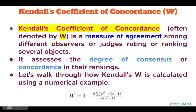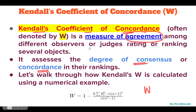Hello everyone, I hope you all are doing very well. In this session we are going to discuss Kendall's Coefficient of Concordance, which we often represent with the alphabet W. Basically it is a kind of measurement of agreement — if several judges are rating some objects, what would be the degree of consensus or concordance? Some objects will have higher agreement among judges, and to measure that, we can calculate Kendall's Coefficient of Concordance.